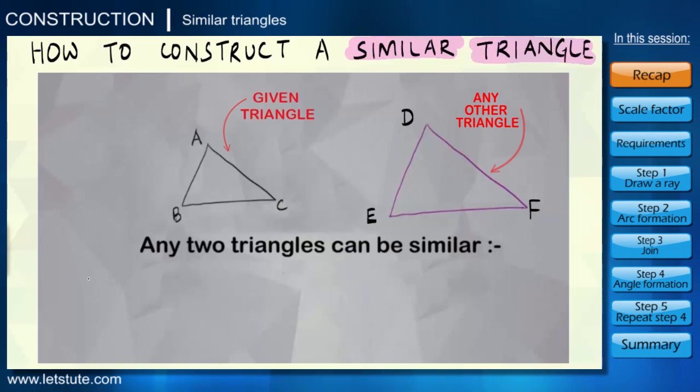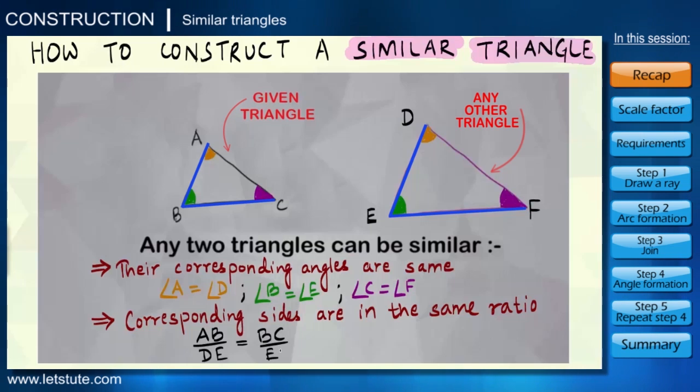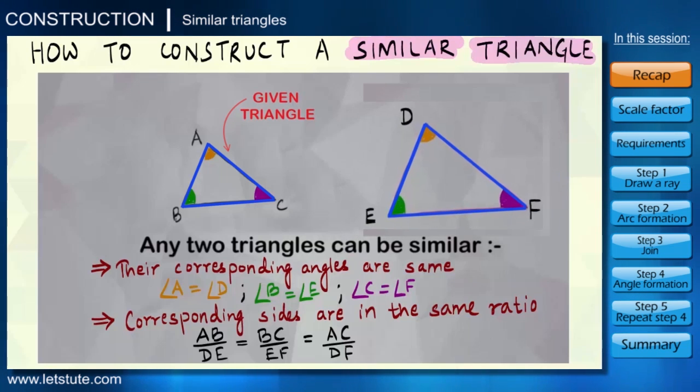We have learned in our previous session that it happens whenever corresponding angles between them are same and corresponding sides are in the same ratio. As long as these criteria are satisfied, size of the triangle won't matter - it can be bigger than the given triangle or smaller or even an exact photocopy. Also, it won't make a difference if we rotate this similar triangle in any direction because these criteria will remain the same.